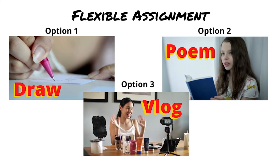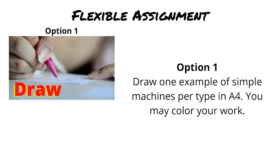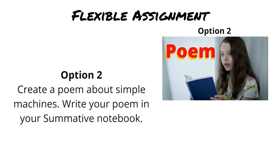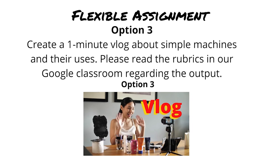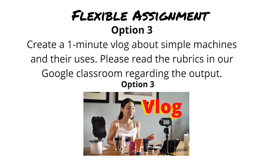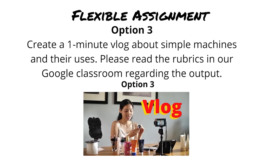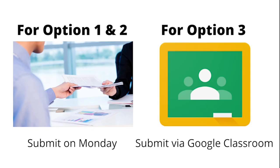Assignment. For our assignment, you may choose from any of the following options. Option 1: Draw one example of simple machines per type on an A4 sheet. You may color your work. Option 2: Create a poem about simple machines and write it in your summative notebook. Option 3: Create a one-minute vlog about simple machines and their uses. Please read the rubrics in our Google Classroom. For options 1 and 2, submit your output on Monday. For option 3, send your video in our Google Classroom.